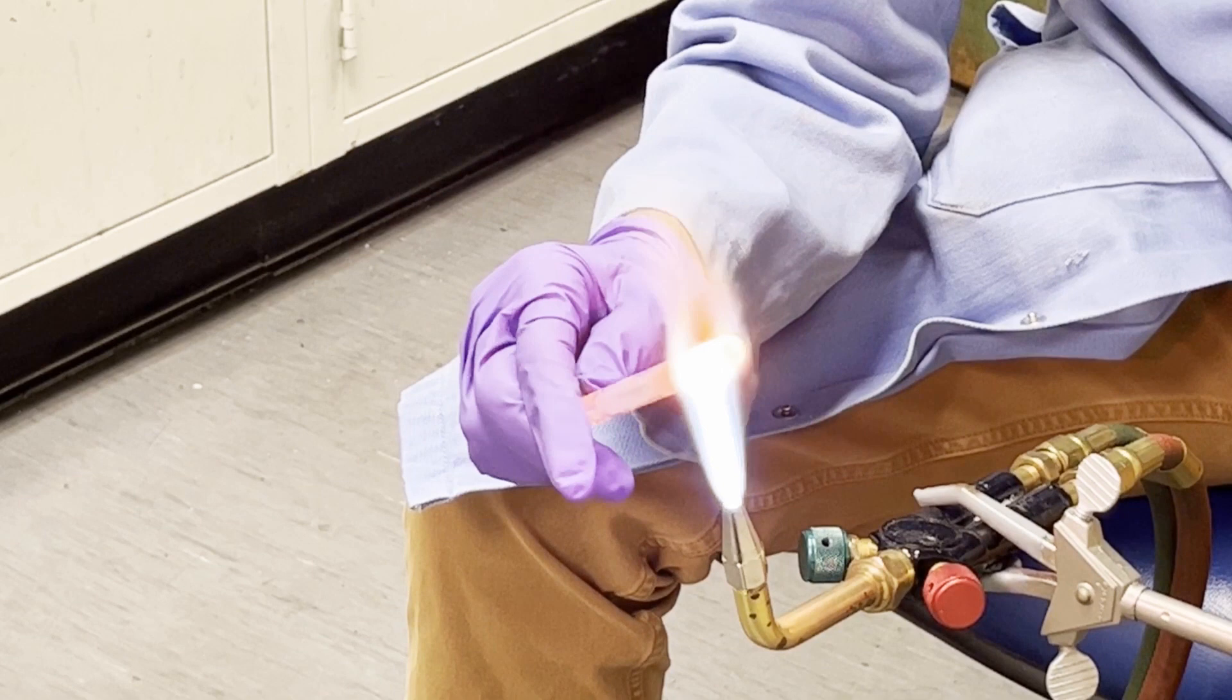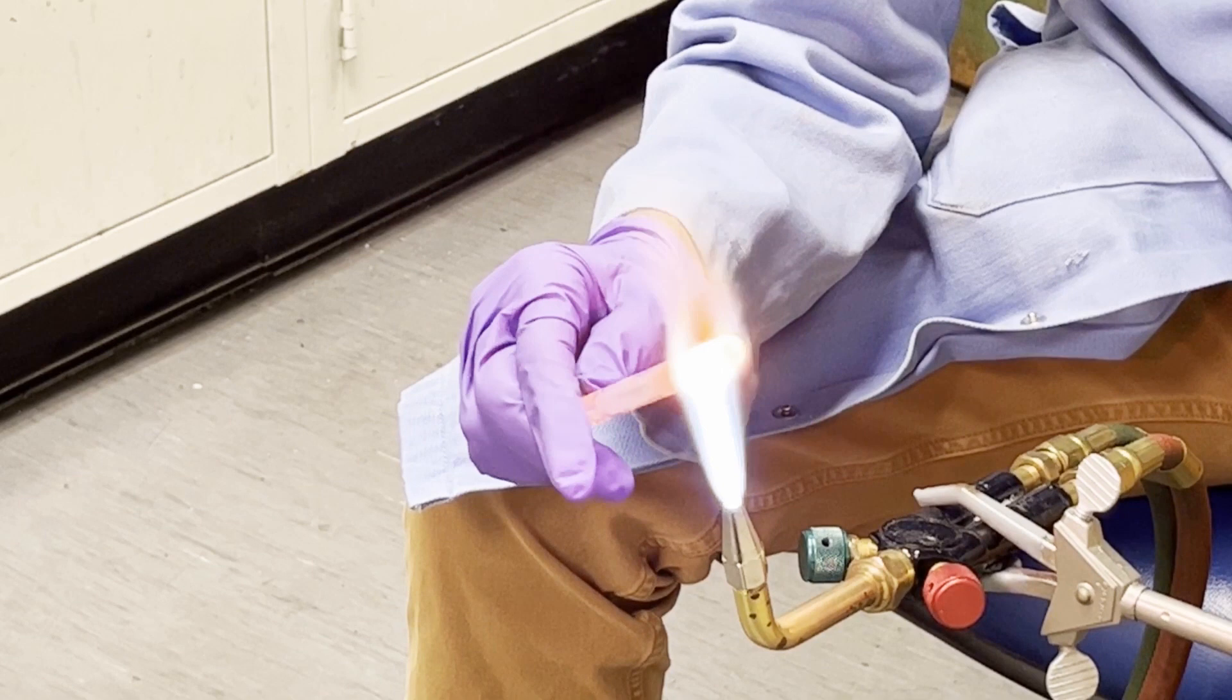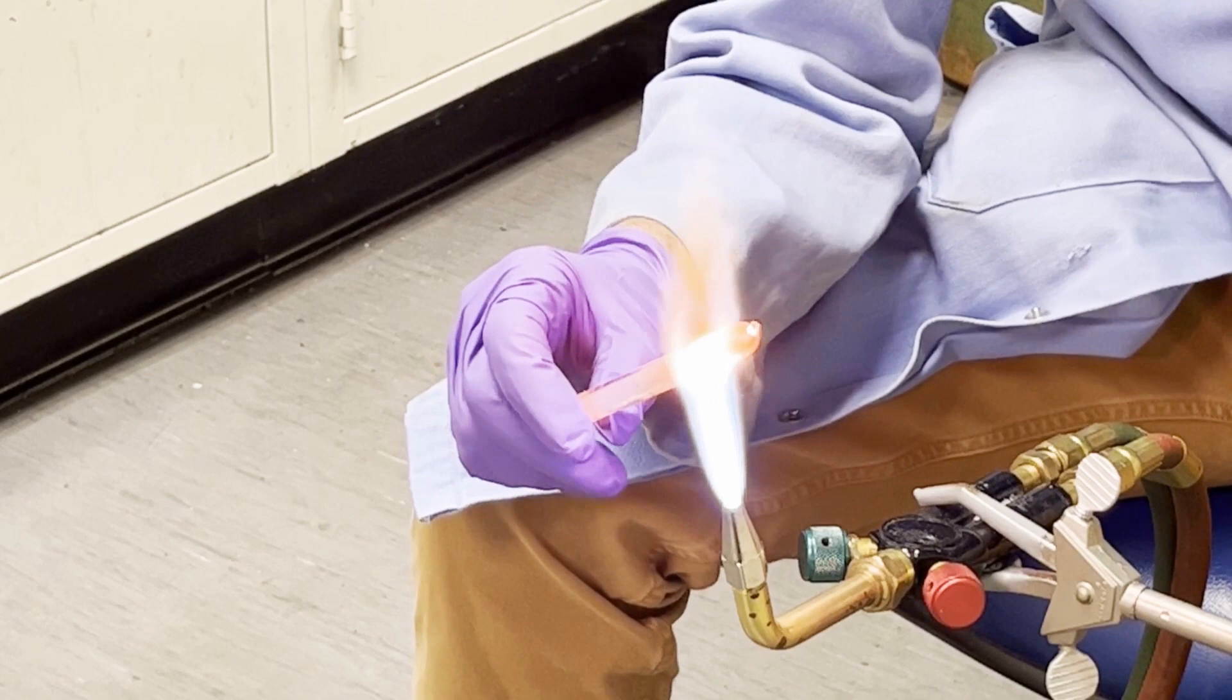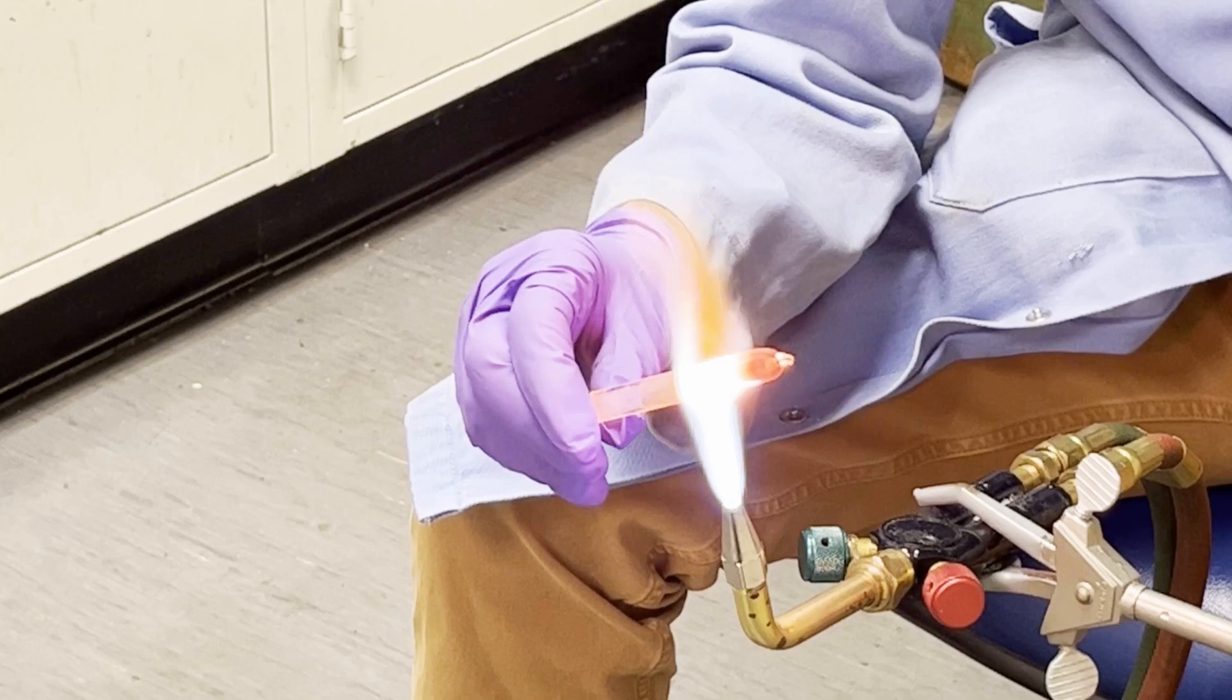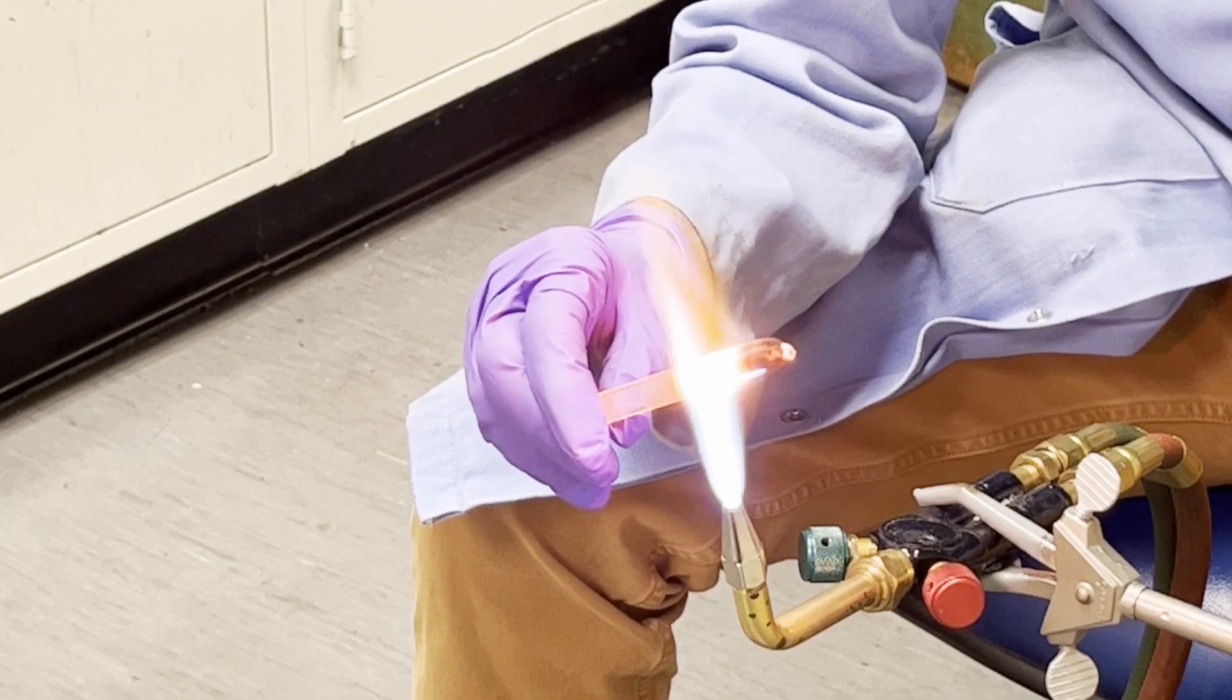You can carbon coat as high up the tube wall as you want, but if you have too much carbon that's going to get in the way of your sealing, so it's going to prevent you from getting a good seal. Really, you only need to carbon coat as high up the walls as you think your material is going to reach.